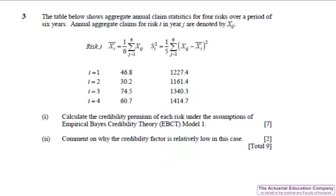Question three was a straightforward question on the EBCT model one from chapter six of the notes. Part one, we simply have to use the formulae given on page 29 of the tables, and this would have presented absolutely no problem whatsoever to students. In part two, we have to comment on why the credibility factor is low. If you looked at the results of your calculation, you would have found that E of s squared theta was much bigger than variance of theta, and this caused a low credibility factor.